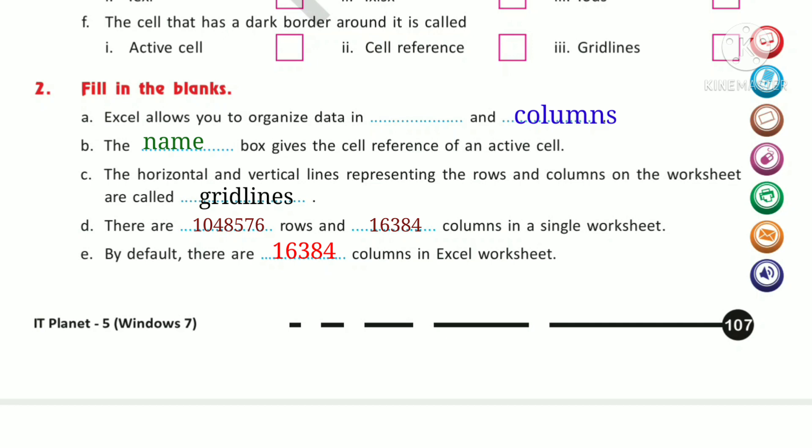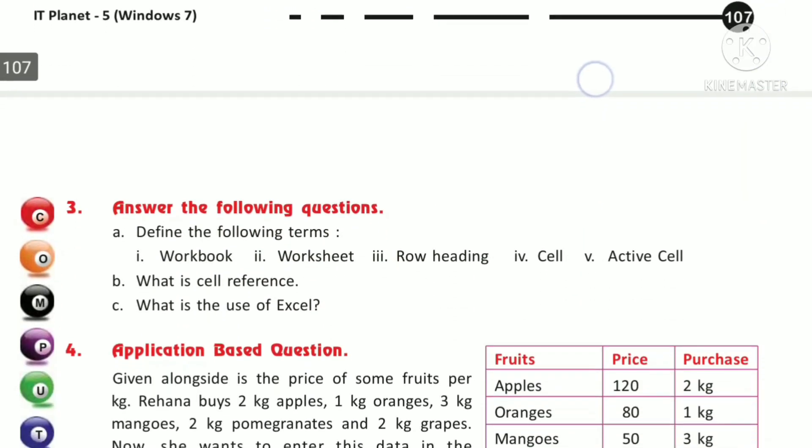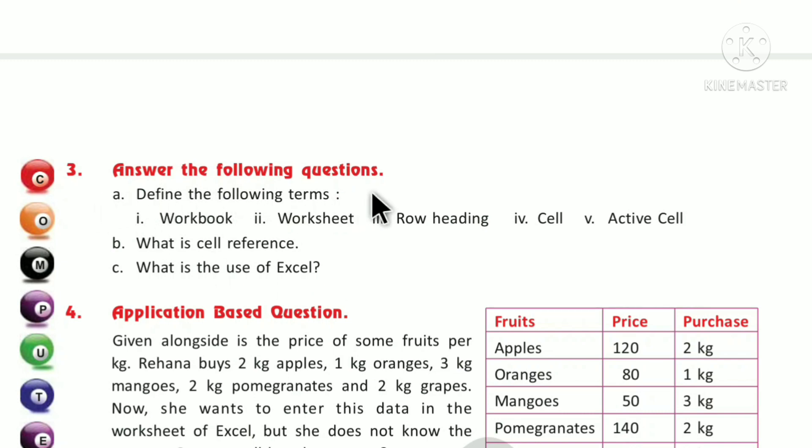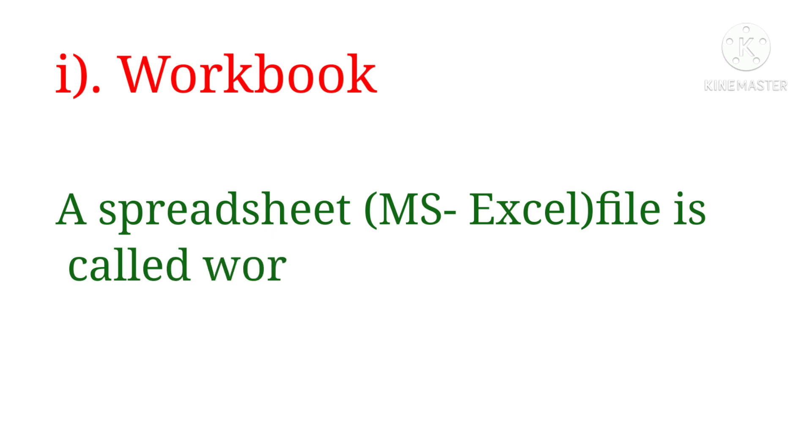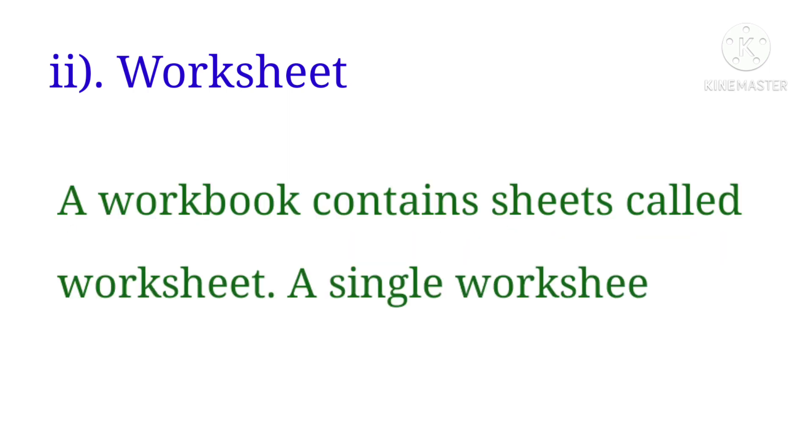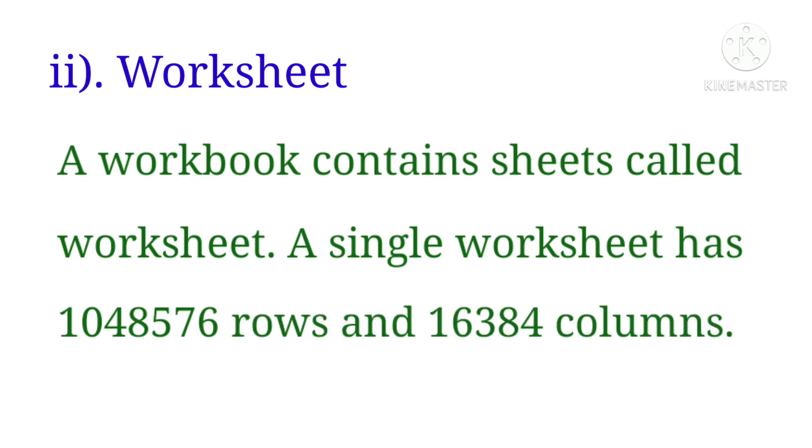Exercise 3: Answer the following questions. Define the following terms. First, workbook: A spreadsheet MS Excel file is called workbook. Next, worksheet: A workbook contains sheets called worksheets. A single worksheet has 1,048,576 rows and 16,384 columns.